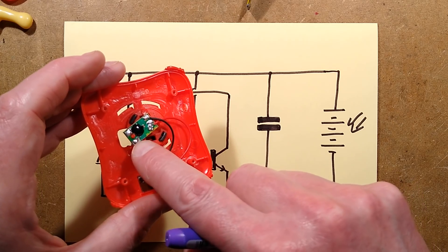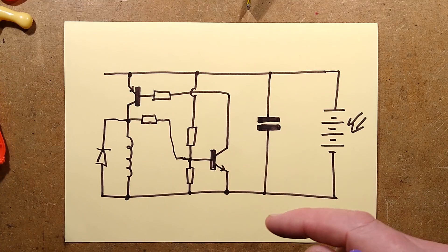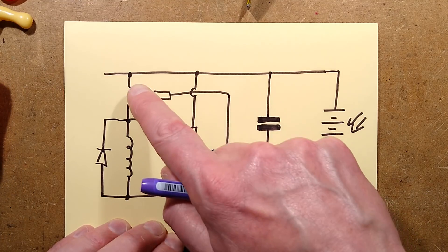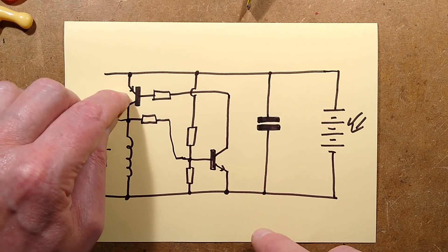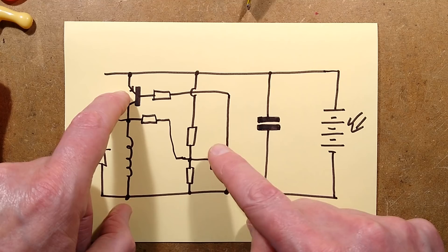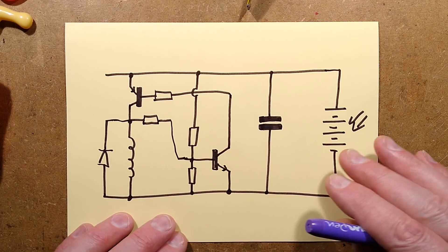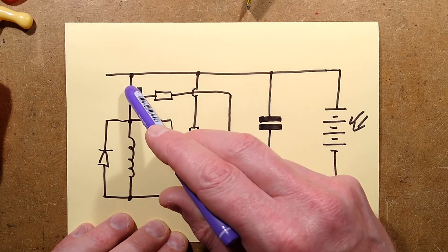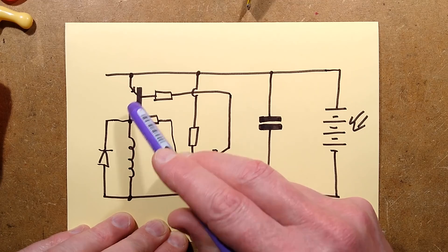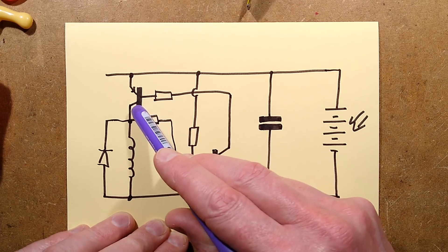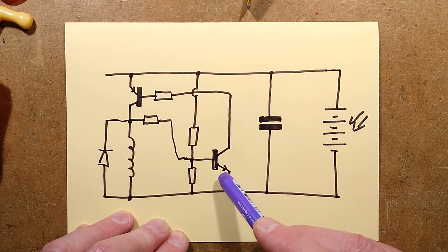That would be a PNP transistor. Normally these arrangements have one PNP and one NPN. One of the transistors is used, well they're both effectively used to turn each other on at one point. But here's the process what might happen. This transistor when it is going to pull the coil to positive to energize it, but to actually turn on, it needs its base to be pulled down to the negative rail and that's what this transistor does here.